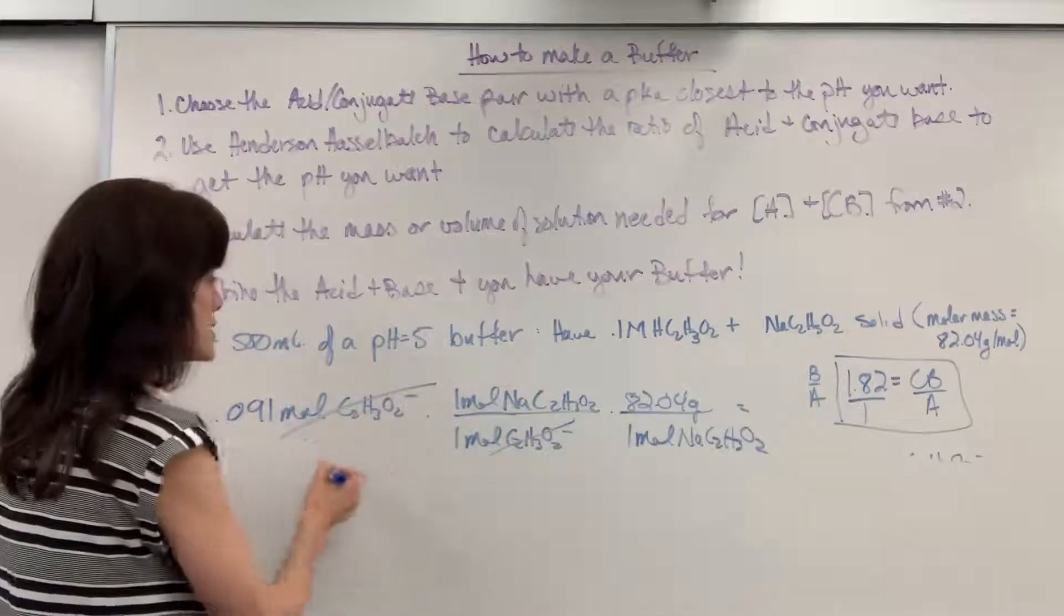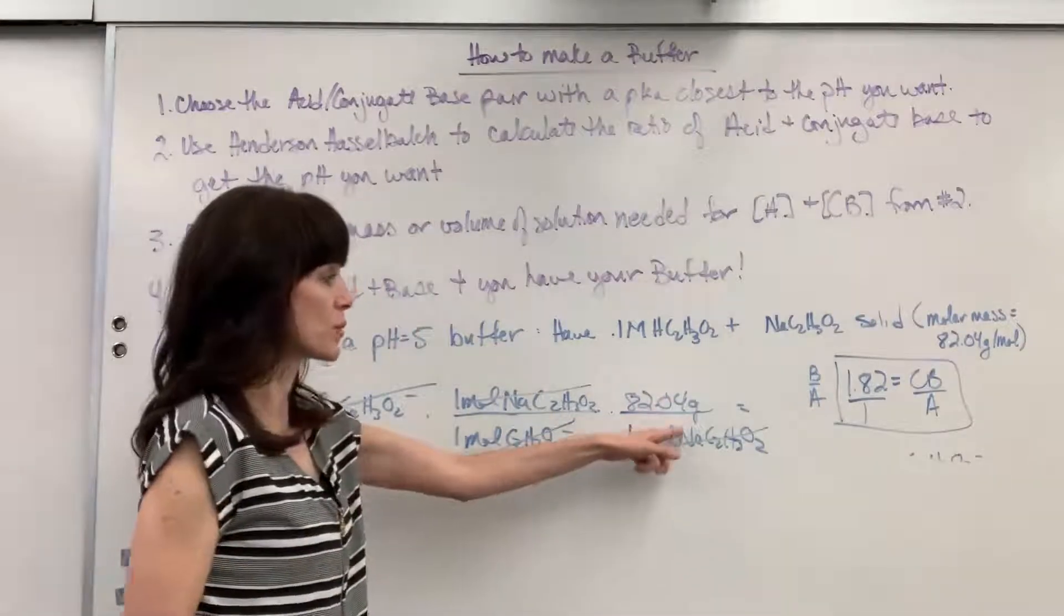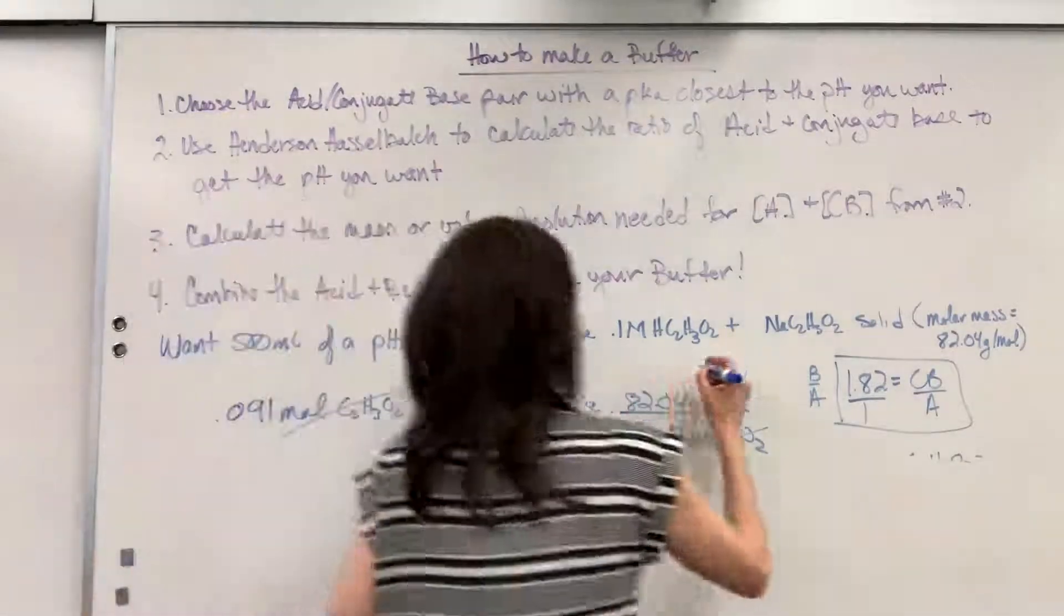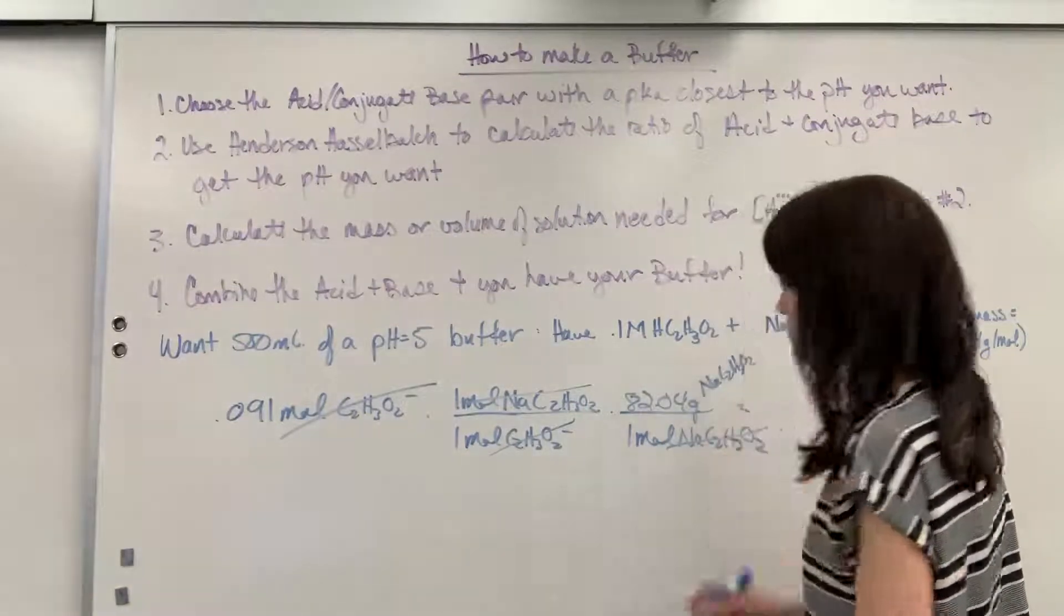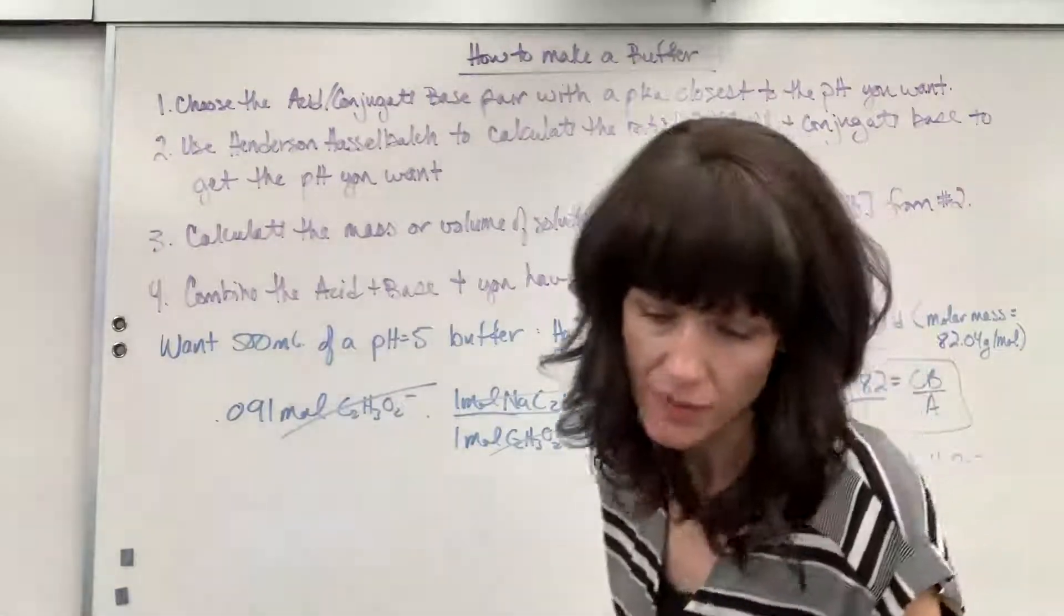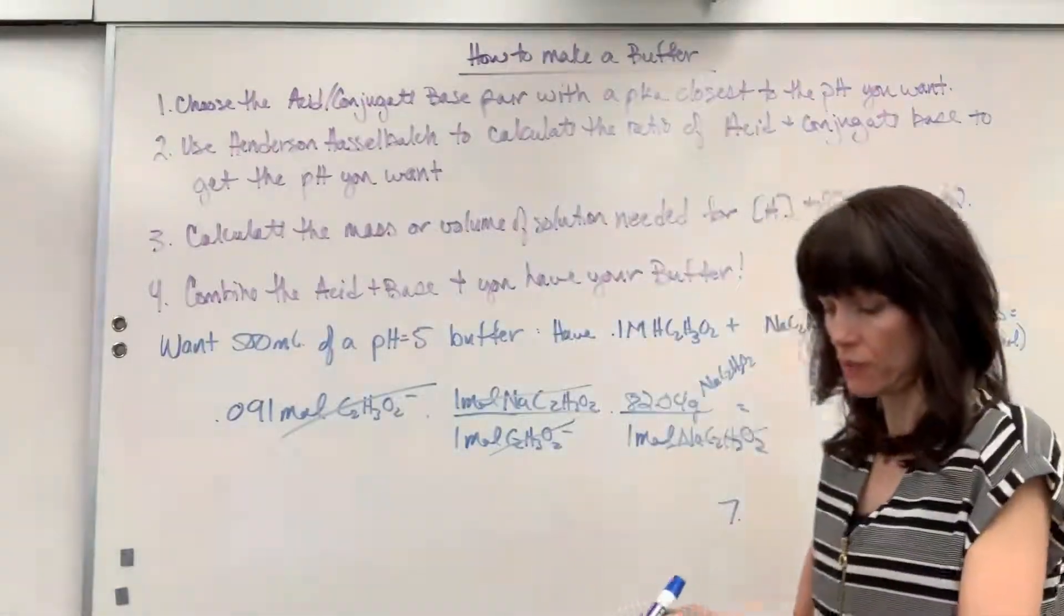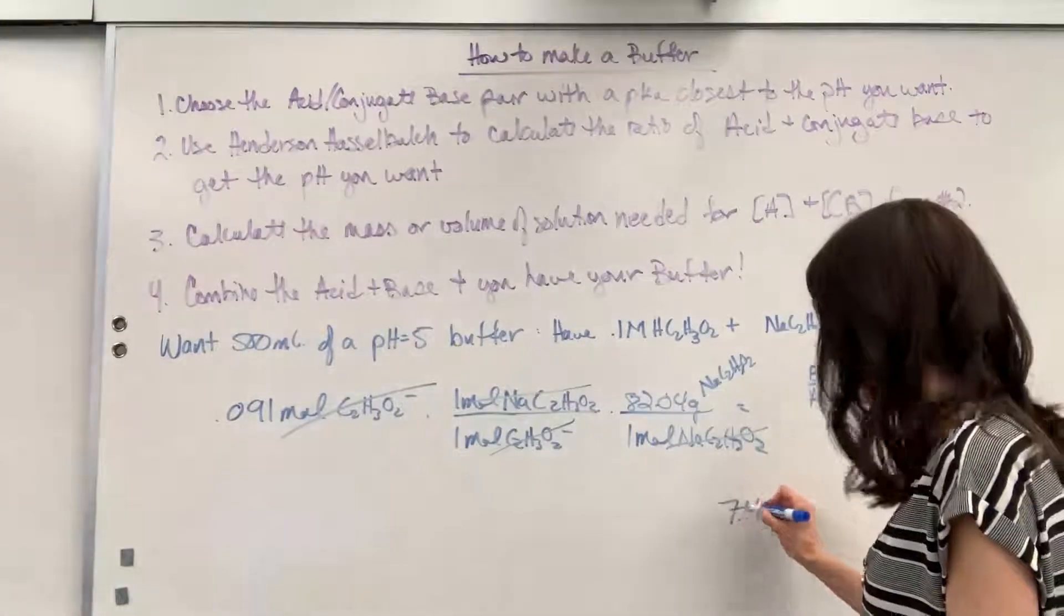One mole of the sodium acetate has a mass of 82.04 grams. So moles of acetate cancels, moles of sodium acetate, and we're going to be left with grams of sodium acetate. Let me write this up here so you can see it. Just so there's no confusion. So multiply, and that is going to give us 7.47. I had to read my handwriting. Sometimes that's hard.